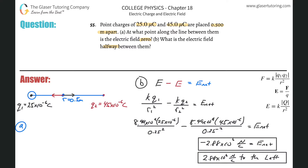I don't know the distance from the black charge to the unknown point, so I have to state it as a variable — we call it x. And then what's the distance from the point to the red charge? Well, since the total distance is 0.5 meters, if I subtract x I get the remaining piece: 0.5 minus x. So those are our two expressions, and now we have everything we need.